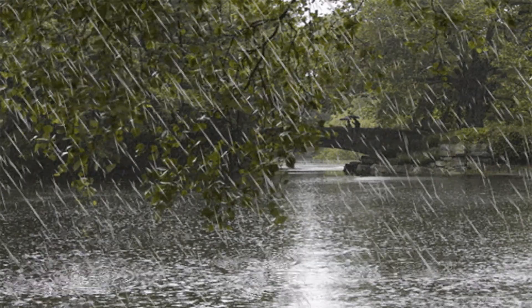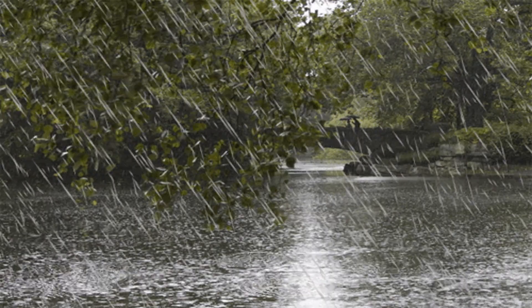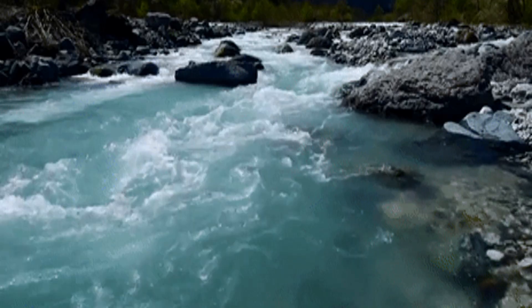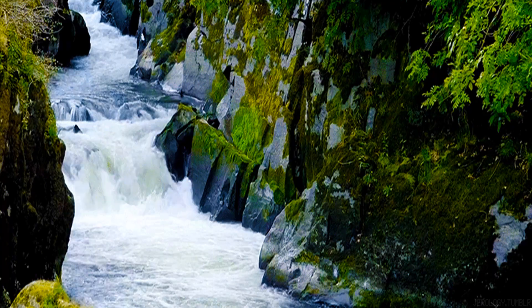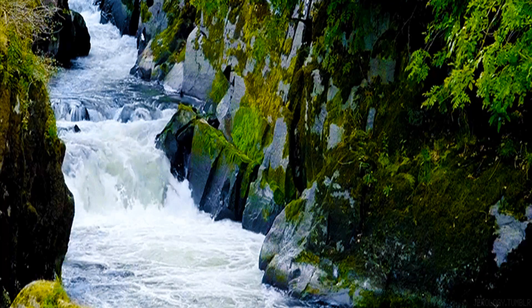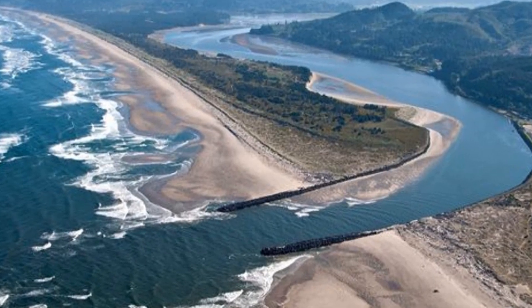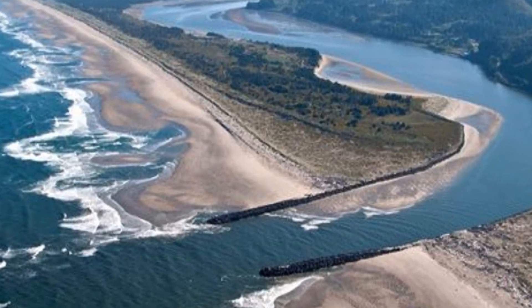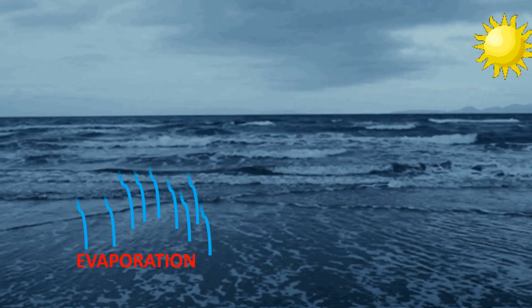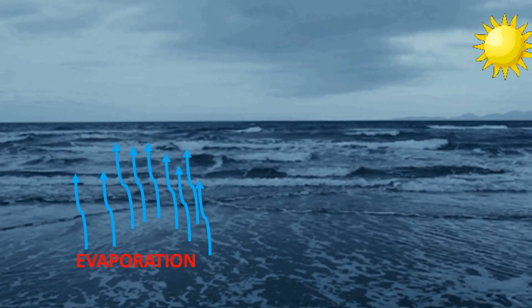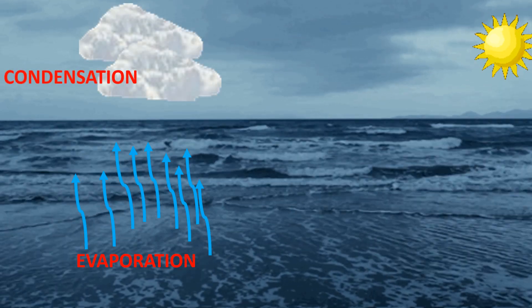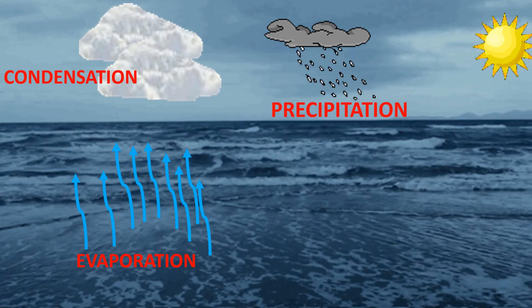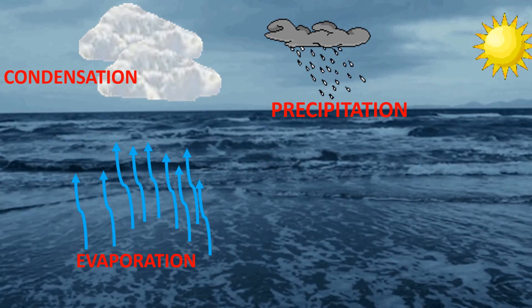The rain water that falls on the ground flows through lakes, streams and rivers. Finally, it reaches the sea. Again, the cycle repeats — evaporation, condensation and precipitation. This cyclical process is known as the water cycle.